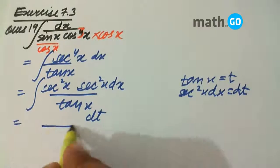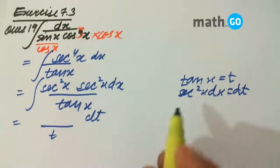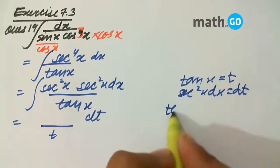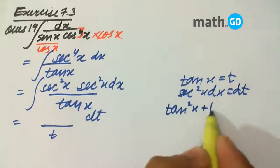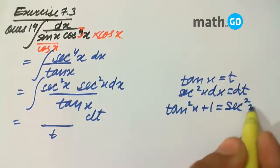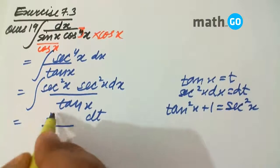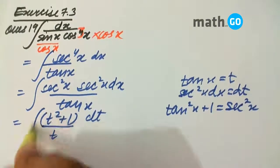And sec square x, we know that tan square x plus 1 equals to sec square x. So it is simply t square plus 1.